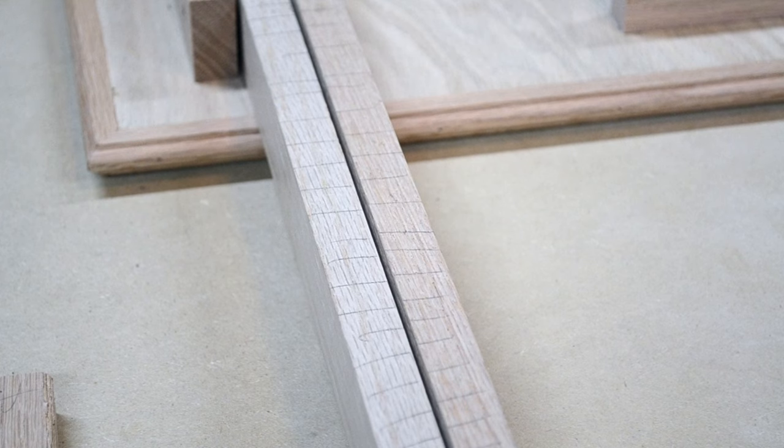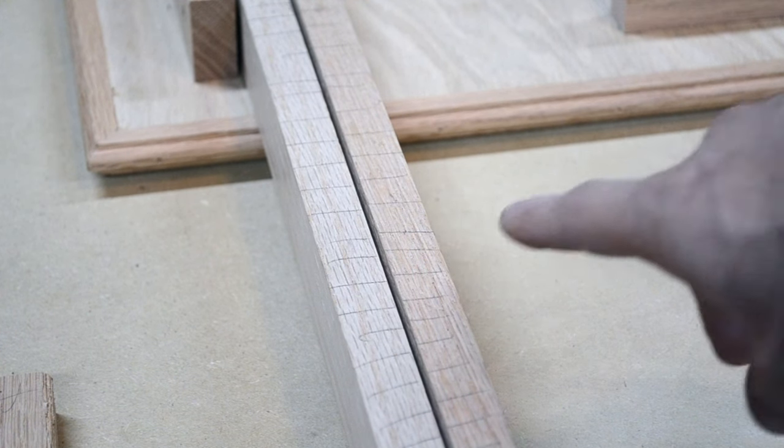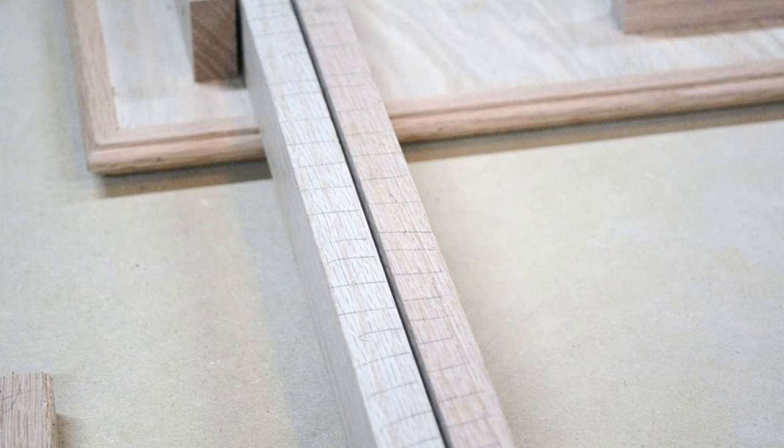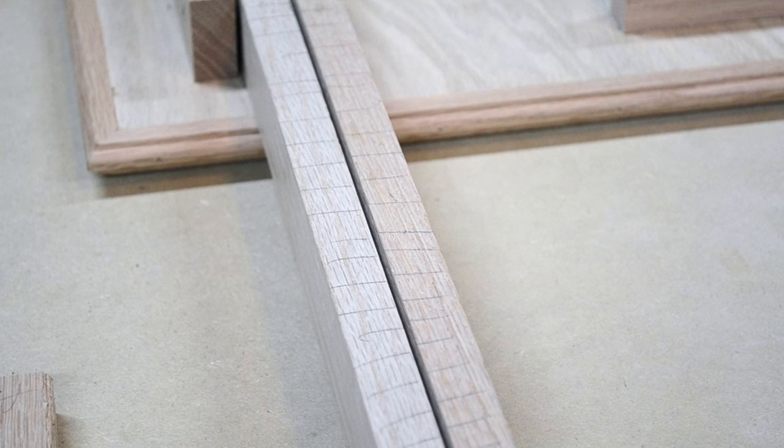One thing I forgot to mention was one way that I figure out when everything is set up perfectly is to put marks all the way down my project, as you can see right here. That helps me to know when all those lines are completely gone, then I have the two pieces at the same thickness or extremely close to the same thickness.